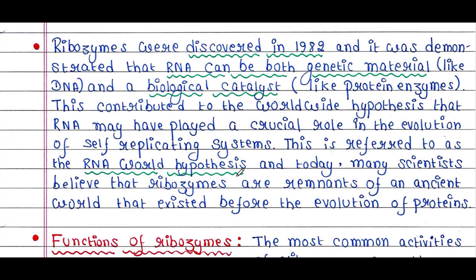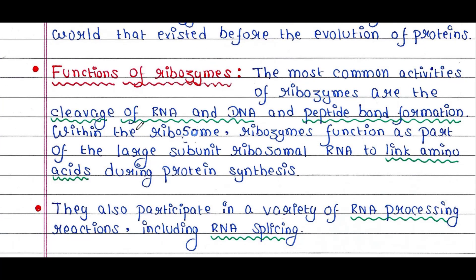According to the RNA world hypothesis, RNA came first, then DNA and protein arrived in life. RNA was indeed able to replicate, and today many scientists believe that ribozymes are remnants of an ancient world that existed before the evolution of proteins.